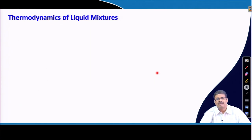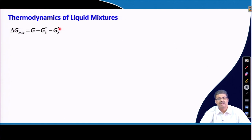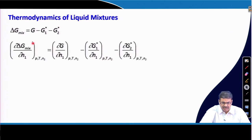We will now discuss how Flory-Huggins theory can be utilized to derive some thermodynamic parameters. Before that, let me quickly revise the thermodynamics of liquid mixtures. Delta G of mixing is given by this expression: G is the Gibbs free energy of the mixture, this term is for the pure solvent, and this is for the pure solute. Subscript 2 is generally used for solute and 1 for solvent; the star means pure component.